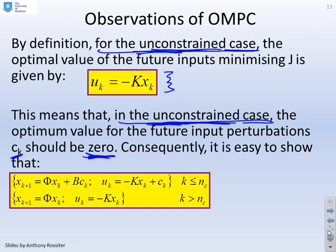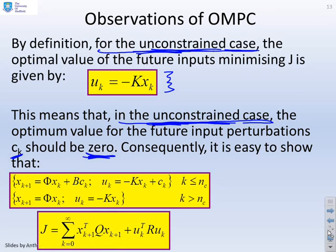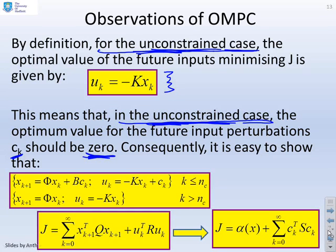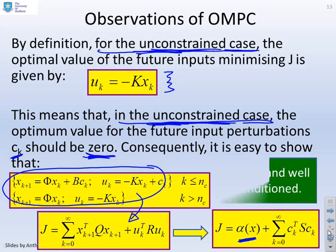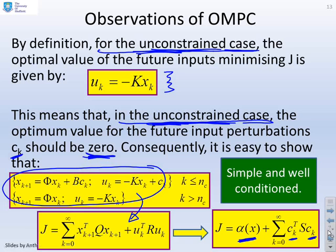Consequently, it's easy to show that if you combine these predictions with this performance index and you calculate the corresponding J, that is, you substitute these predictions into this performance index and go through all the algebra, you'll find the performance index is some function of x_k, which you cannot change because that's the current state, plus c_k transpose Sc_k or the sum of all those terms. Why is that interesting? Number one, it's simple and well conditioned because you've just got the sum of squares of these c_k terms with some S term in between. The other thing is it tells you that the optimum c_k is zero.